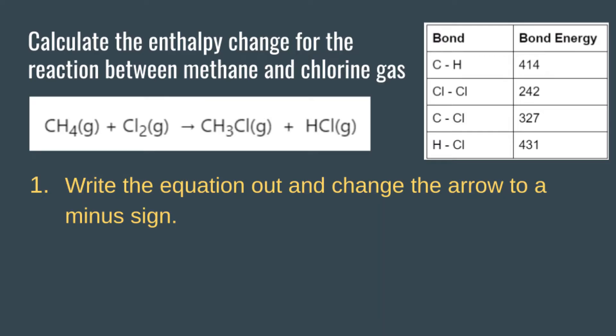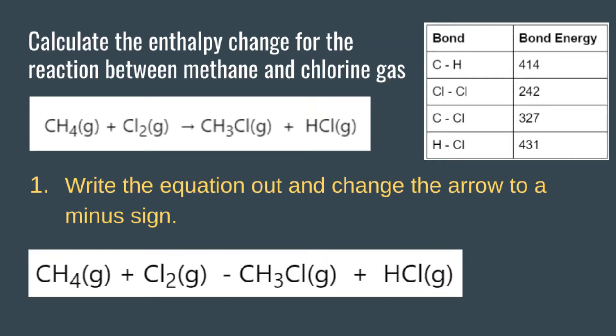Here we have the same equation as above, but instead of an arrow saying the reactants are turning into products, we have a minus sign saying it is the bond enthalpies of reactants minus the bond enthalpies of the products.